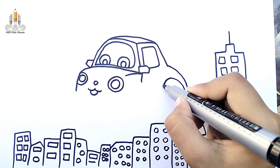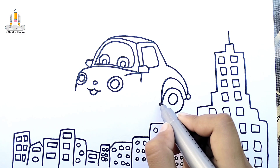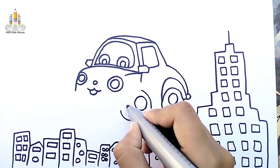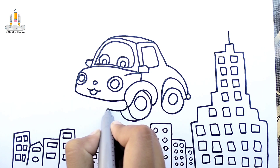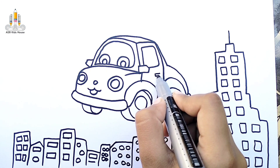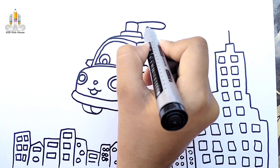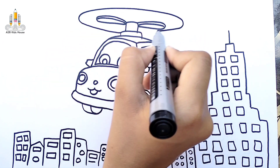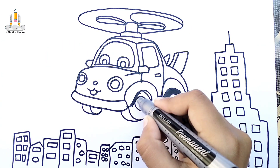Now draw its tiles — it has four tiles. It's time to draw its wings. Yeah, it's looking good. It's time to color!